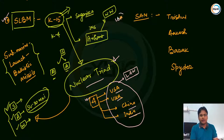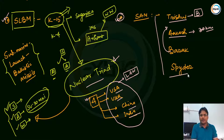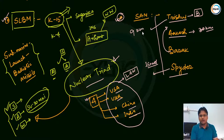In surface-to-air missiles, the Trishul missile system was replaced by Barak from Israel. The Akash missile system had a range of 30 km altitude. Spider missile system was also acquired from Israel. Spider has two variants: Derby and Python. Derby has a range of about 15 km, and Python also covers 15-20 km range. These fill the gap between Trishul/Barak range (9-12 km) and Akash range (30 km).